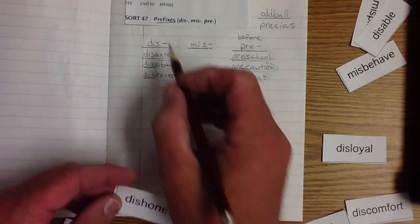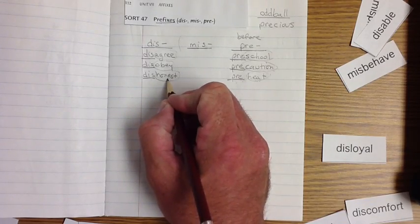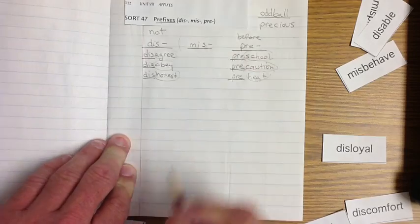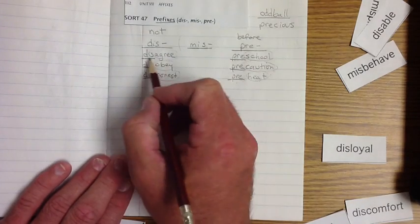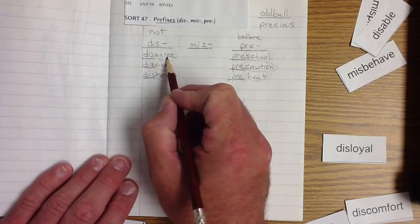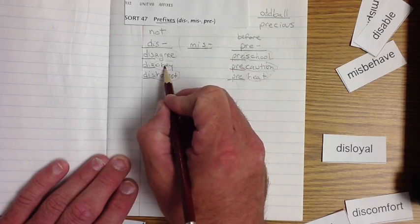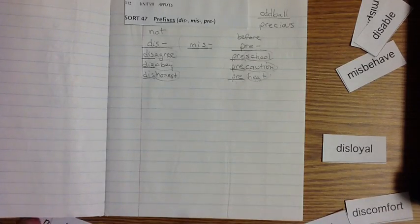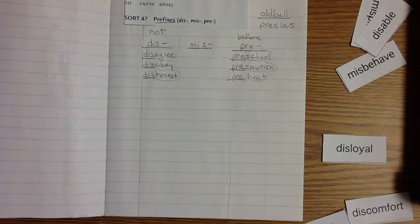Dis is the prefix. And so if we are dishonest, we are not honest. Not agreeing. If we disagree, we do not agree. If we disobey, we are not obeying. That's what those words mean there. I need you to make sure that you understand that these are prefixes, and you're going to find those all over the place.